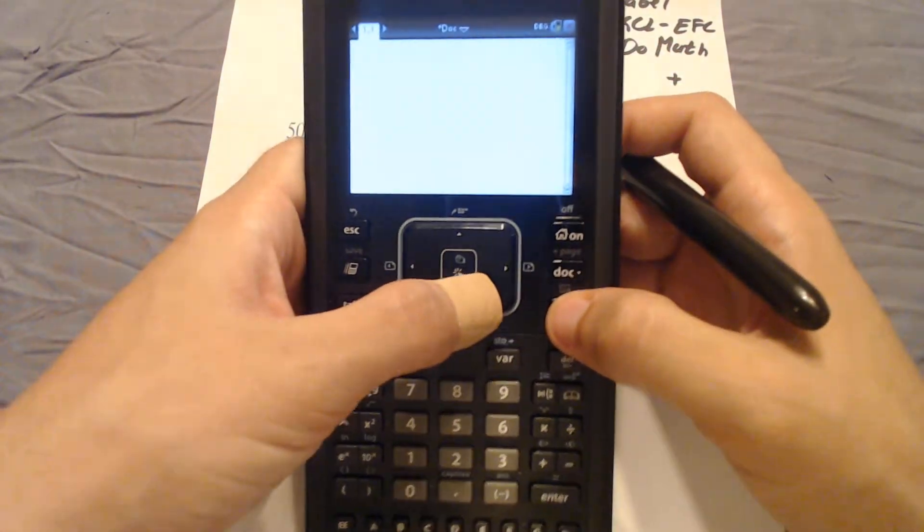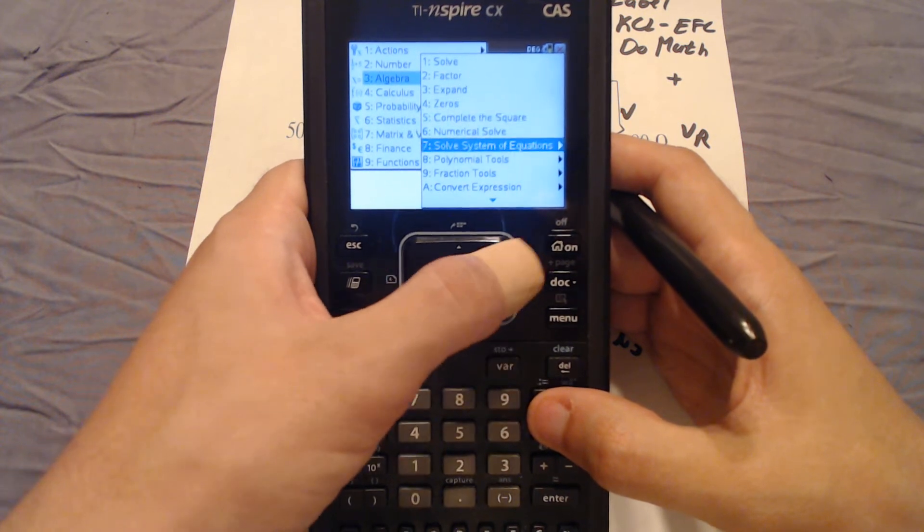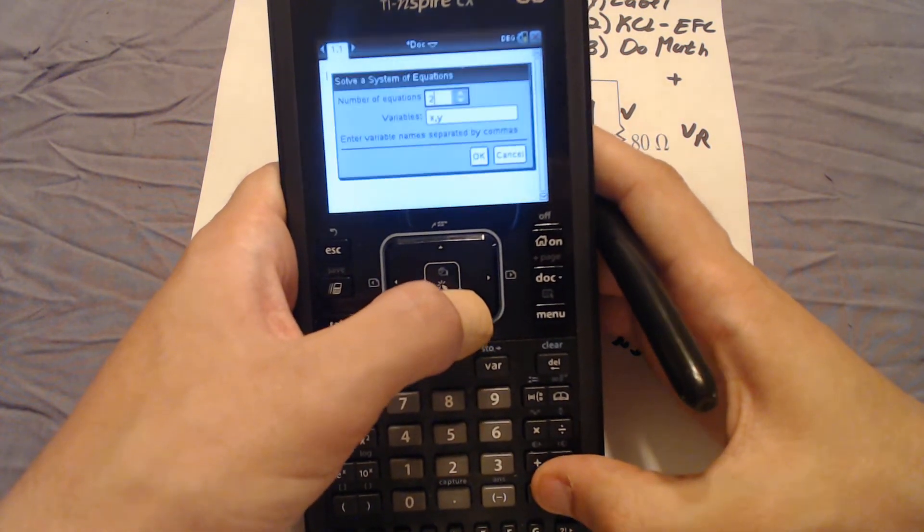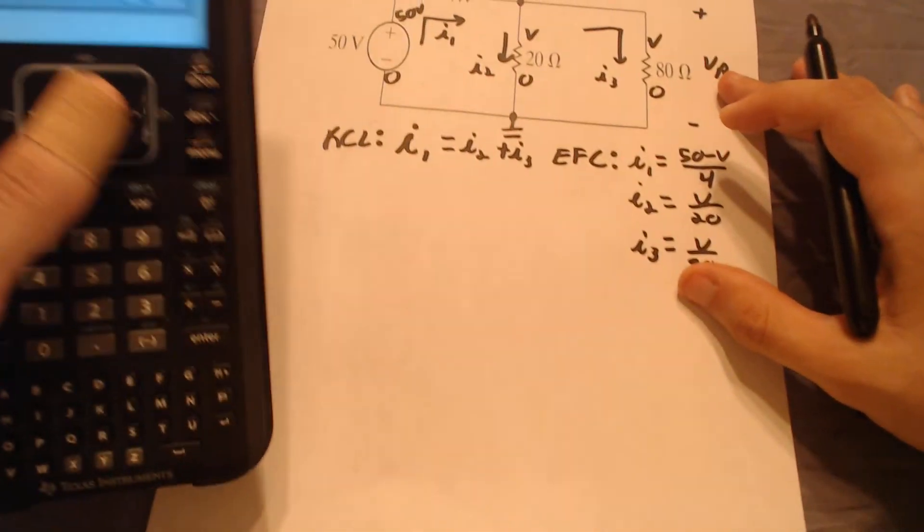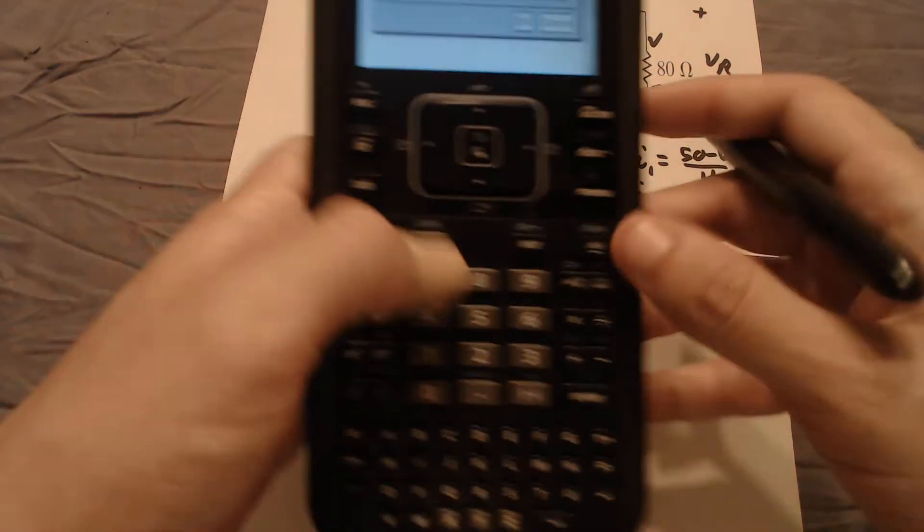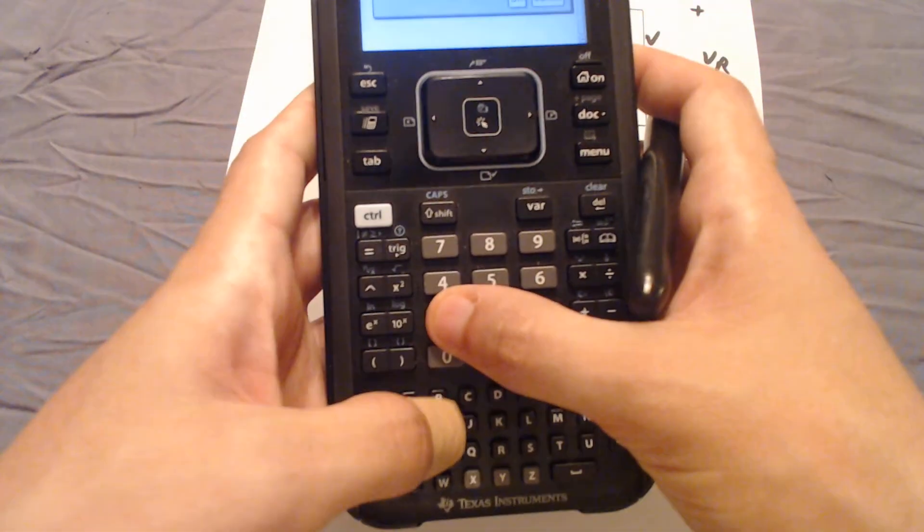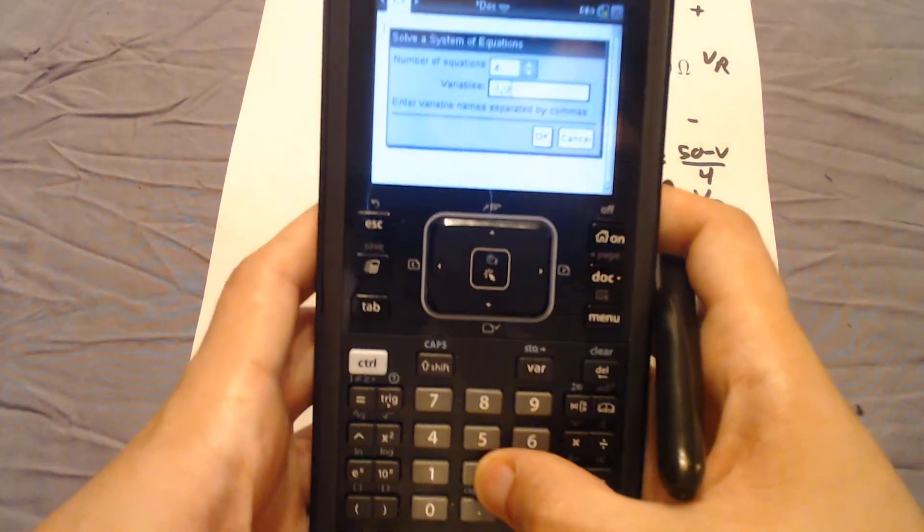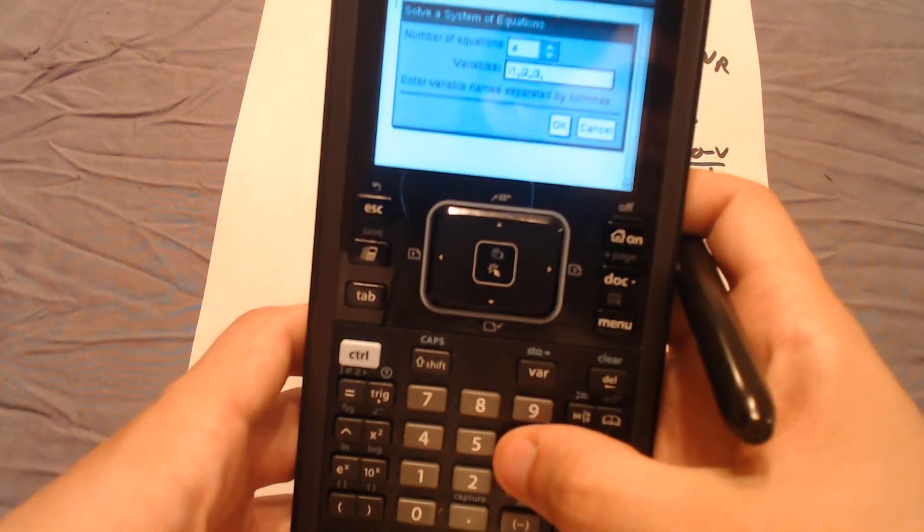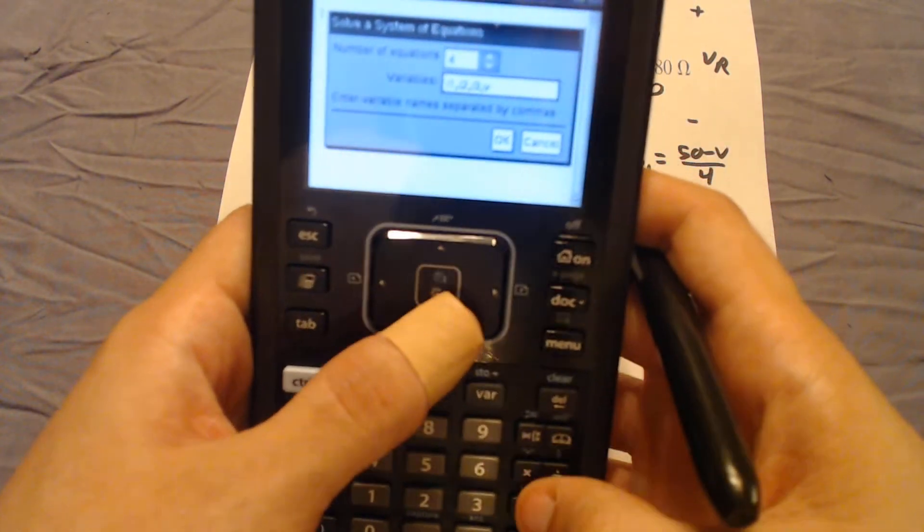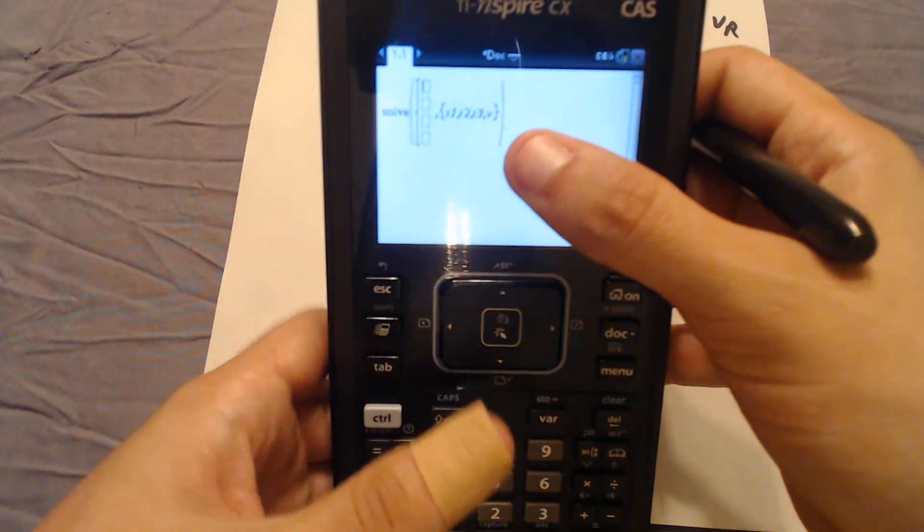So first we hit menu, then we go to algebra, followed by solve system of equations, and then we hit solve system of equations again. It's going to ask us for how many equations we have in our system of equations. In this case, it's going to be 1, 2, 3, 4 equations, and it's going to ask us what our variables are. In this case, our variables are I1, I2, I3, and V. You simply separate them using commas. Then you hit OK, and it's going to set up a system of equations for you.